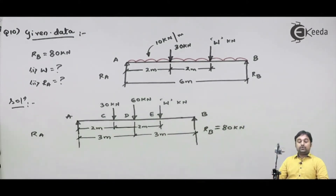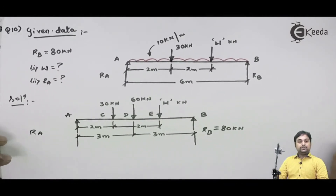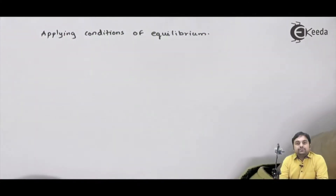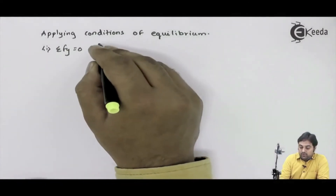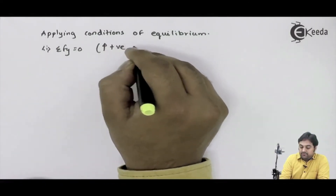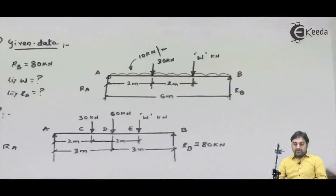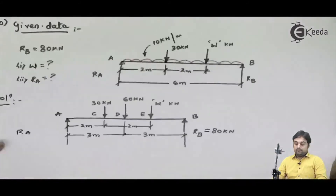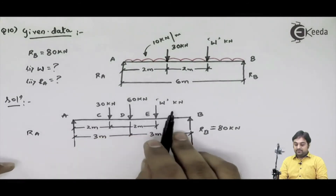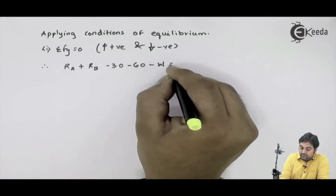We have to calculate what is w and what is RA, so we will be using the conditions of equilibrium. Applying the first condition: summation of Fy equals 0, with upward forces positive and downward forces negative. Therefore, RA plus RB minus 30 minus 60 minus w equals 0.